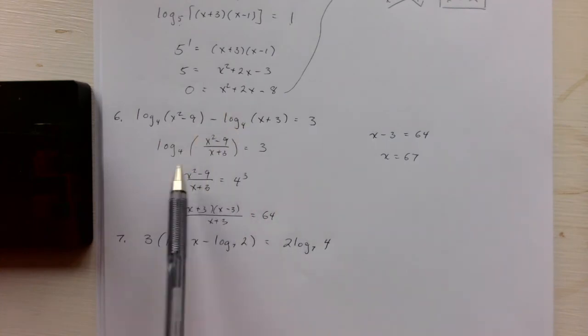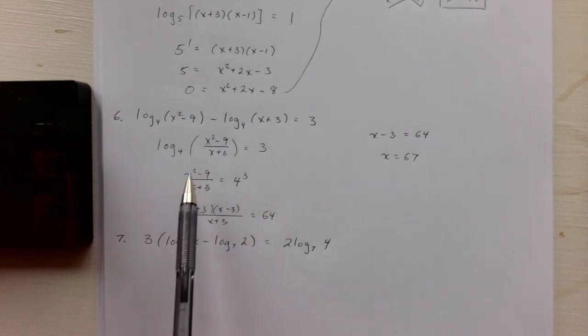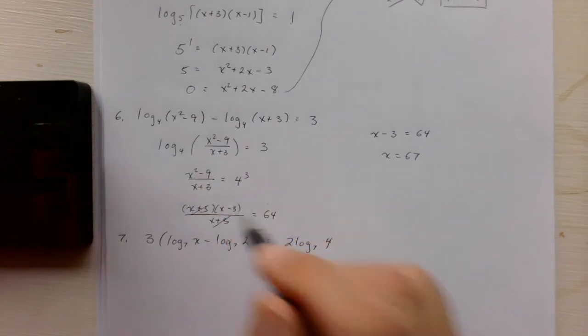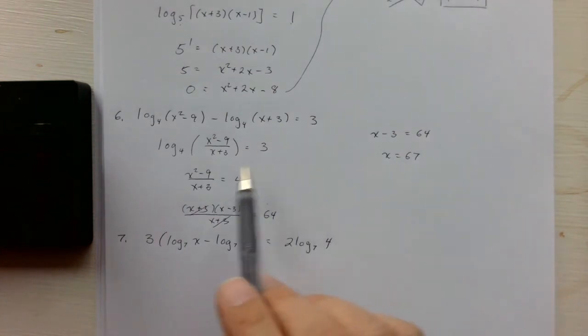You have a difference, so you have the log base 4 of a quotient equals 3. So that quotient has to be 4 to the 3rd, which is 64. And this quotient is, you can see, x squared minus 9 factors as a difference of two squares. So the x plus 3 is canceled. And we get x minus 3 is 64, so x is 67.